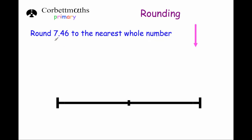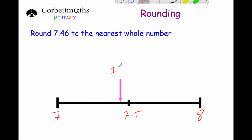Our last example asks us to round 7.46 to the nearest whole number. The whole number below is 7 and above is 8, and in between is 7.5. Now 7.46 is going to be below 7.5, so on the number line it would be somewhere around here. Because it's below 7.5, it's closer to 7 than to 8, so our answer is 7.